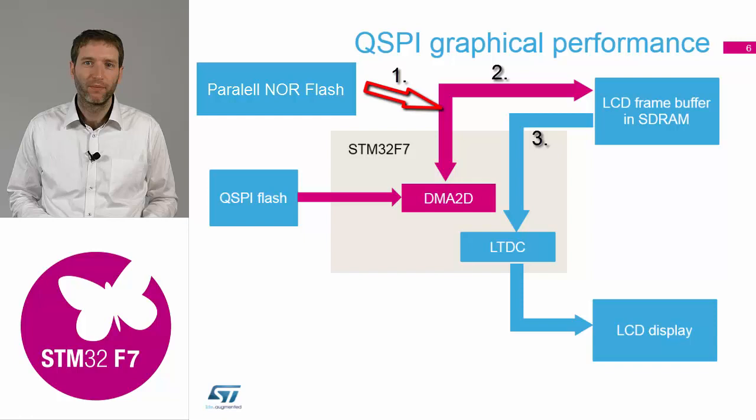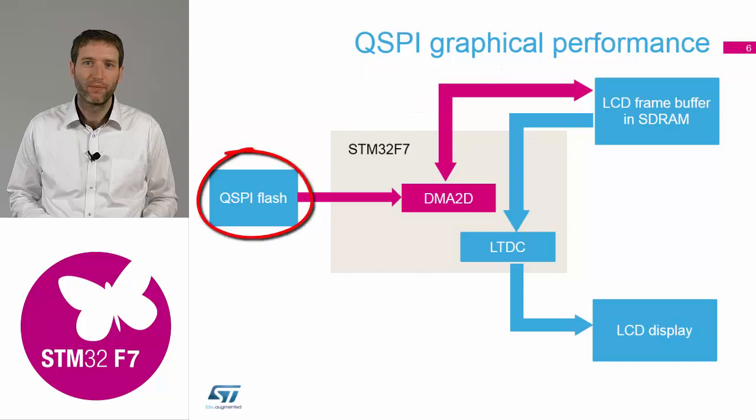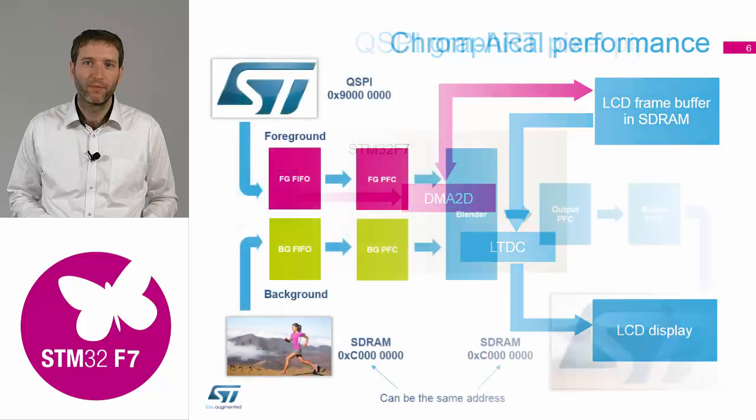Having the non-volatile image data in another memory — such as quad SPI, connected through a separate bus — provides relief on the FMC bus and enables the use of higher display resolutions and higher color bandwidth. So what exactly is the DMA2D good for?